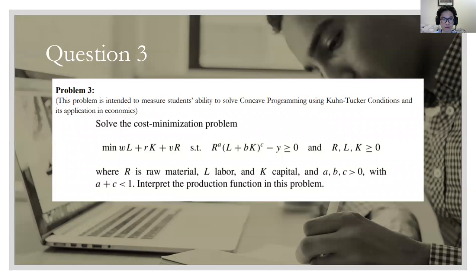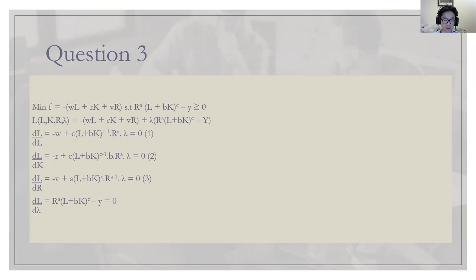As usual, we use the Lagrange equation. I wrote a negative sign here because wL plus rK plus vR is not a function yet — I equate it to zero and move it to the right, giving a negative, and put f as a subject for the function. Creating our Lagrange equation: the function itself plus lambda multiplied by the constraint equation. We then derive with respect to each variable: L, R, K, and lambda.